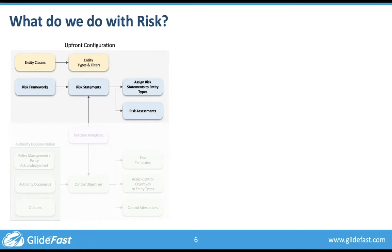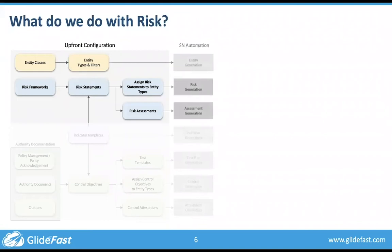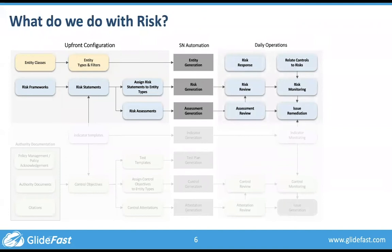You're not going to assess the risk of a fire for the entire enterprise in one shot — you're going to address it to each facility, each data center. You'll address the risk of inappropriate access control leading to exposure of personal information not at the enterprise level, but to each application. That's where the risk statement becomes a risk. Those risks are generated by ServiceNow automatically. The entity type is the hub where we define all those relationships — the system automatically sees the entities to monitor, the enterprise risk statements related to them, and generates the risks themselves.